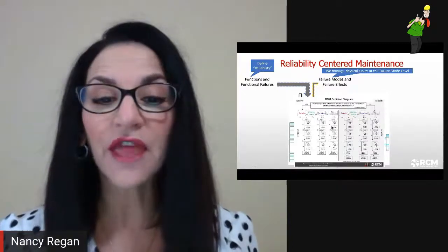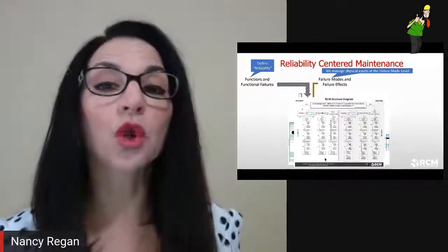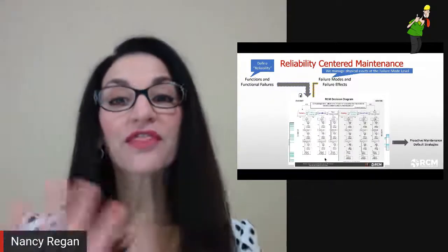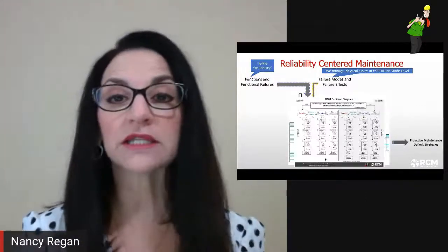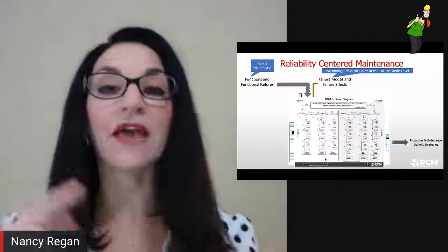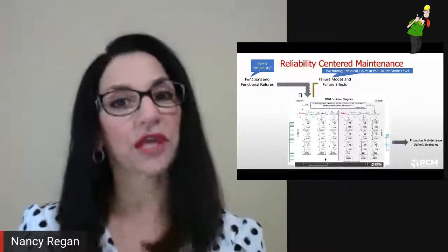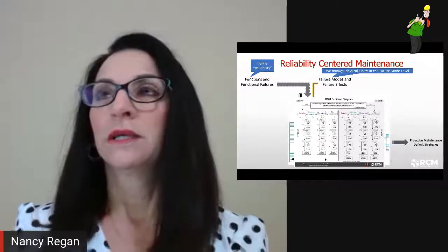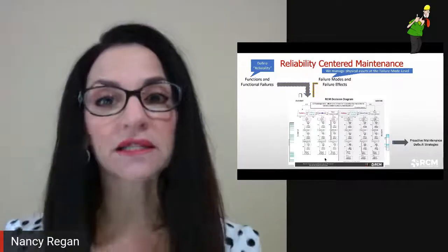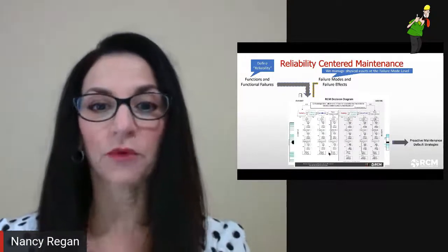We also feed our RCM engine with failure modes and failure effects. We manage physical assets at the failure mode level — in other words, a failure cause — what specifically causes a functional failure. We feed all of this in, put each failure cause through the RCM decision diagram, assess consequences, and we come out with an optimized maintenance program. That's our output, just like power from an engine — proactive, preventive, and condition-based maintenance, plus other default strategies.